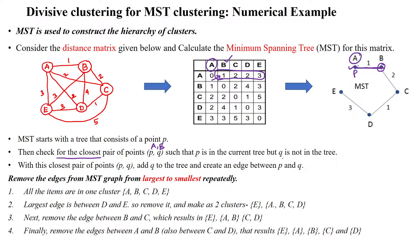Q (which is B) is not yet in the tree. After establishing the edge, B is added into the minimum spanning tree. Next, we select the next minimum edge. From B, the minimum edge is 1, but it is already connected to A, so we select 2, which is connected to C. So now B is P and C is Q.